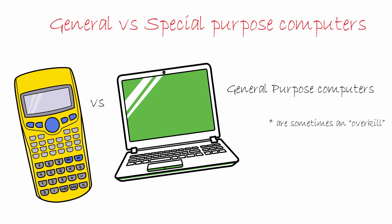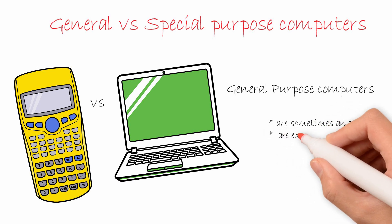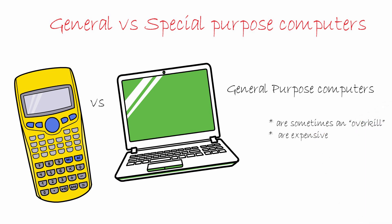General-purpose computers are expensive — a simple calculator costs 10 bucks compared to a 400 dollar laptop or PC. General-purpose computers also can't do everything. If you are serious about photography, it's better to use a DSLR than a smartphone so that you can get better quality pictures. Who doesn't like better quality pictures, right?